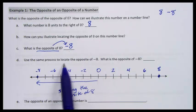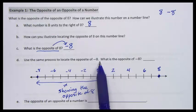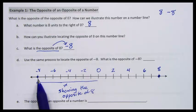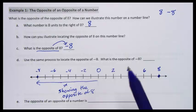If we want to find the process to locate the opposite of -8, here's -8. We need to go in the opposite direction from 0 as -8.